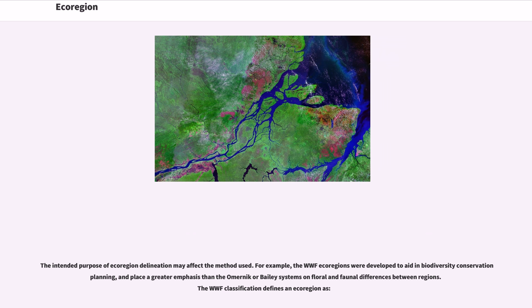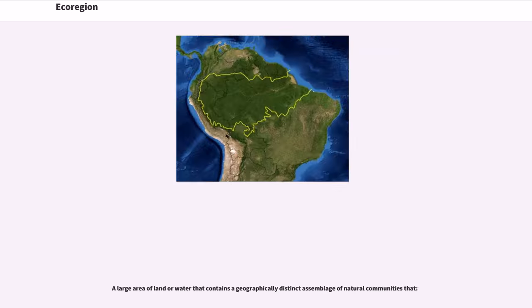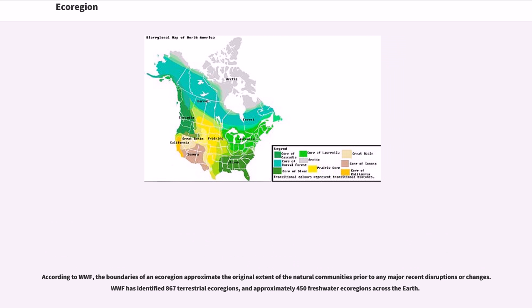The WWF classification defines an ecoregion as a large area of land or water that contains a geographically distinct assemblage of natural communities. According to WWF, the boundaries of an ecoregion approximate the original extent of the natural communities prior to any major recent disruptions or changes. WWF has identified 867 terrestrial ecoregions and approximately 450 freshwater ecoregions across the earth.